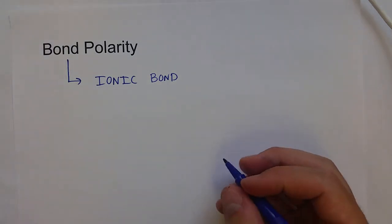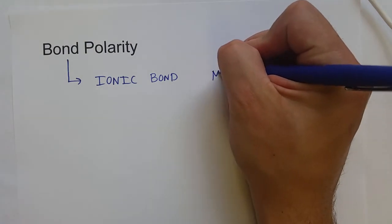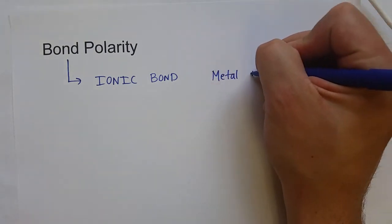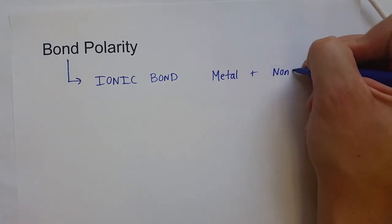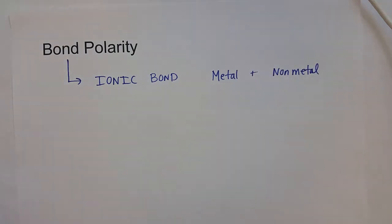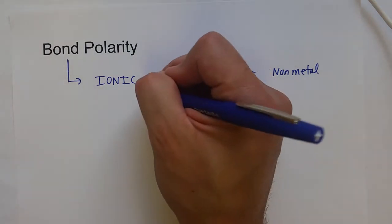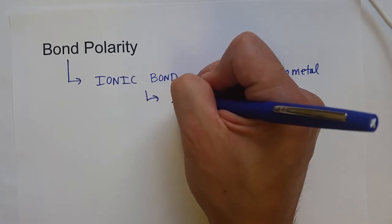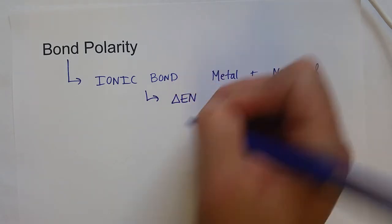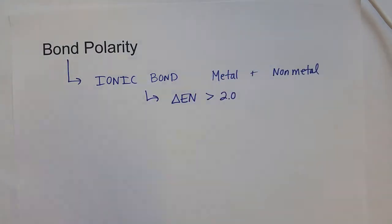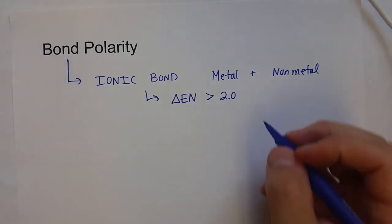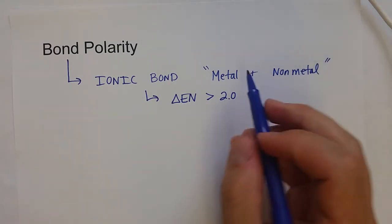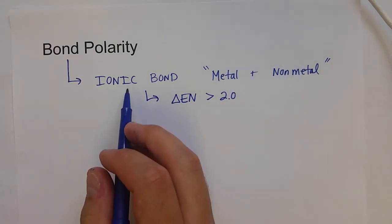And this is usually between a metal and a nonmetal. And if you're using the actual values, this is where the difference or change in electronegativity is greater than 2.0, if you actually do the calculations. But in this course and most general chemistry courses, you can just assume that a metal and a nonmetal are going to form an ionic bond.